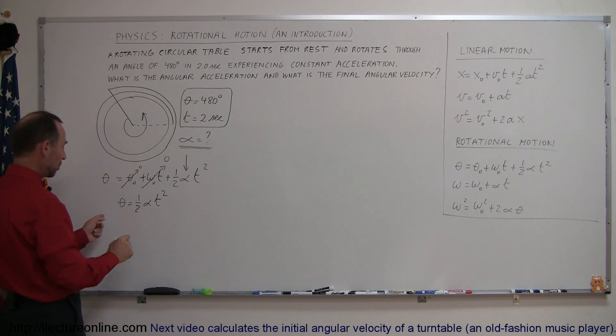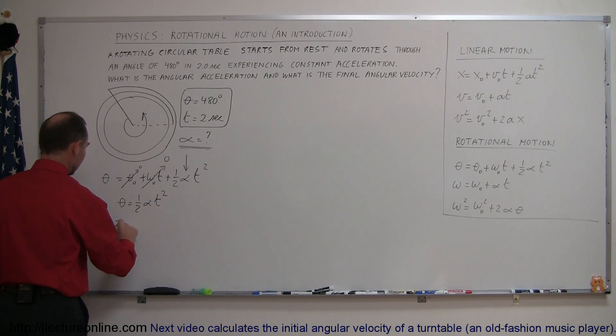Solving this for alpha, we multiply both sides by 2, so we get 2 theta equals alpha times t squared. Then dividing both sides by t squared,